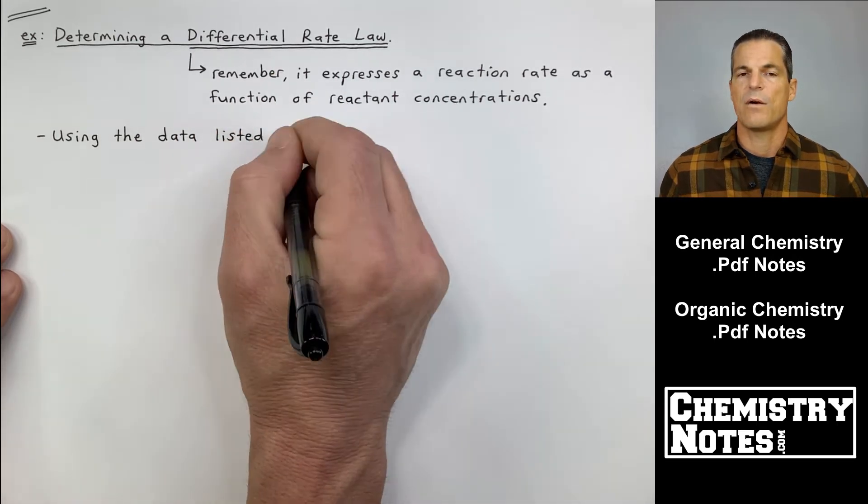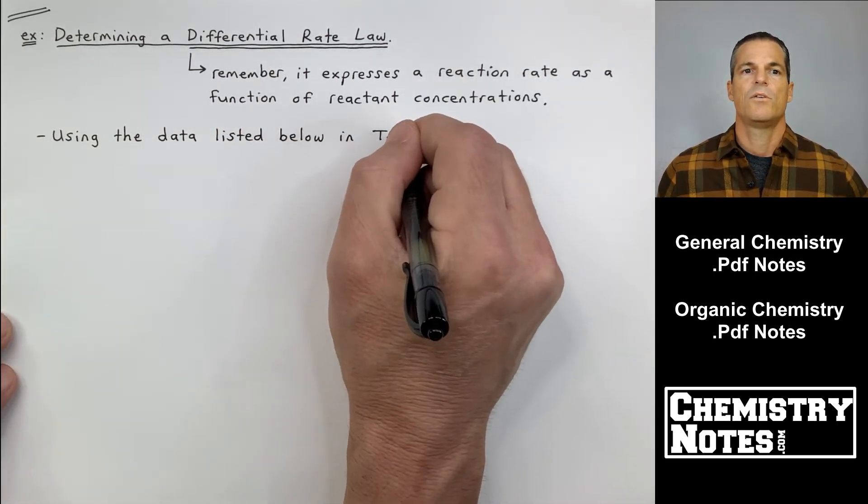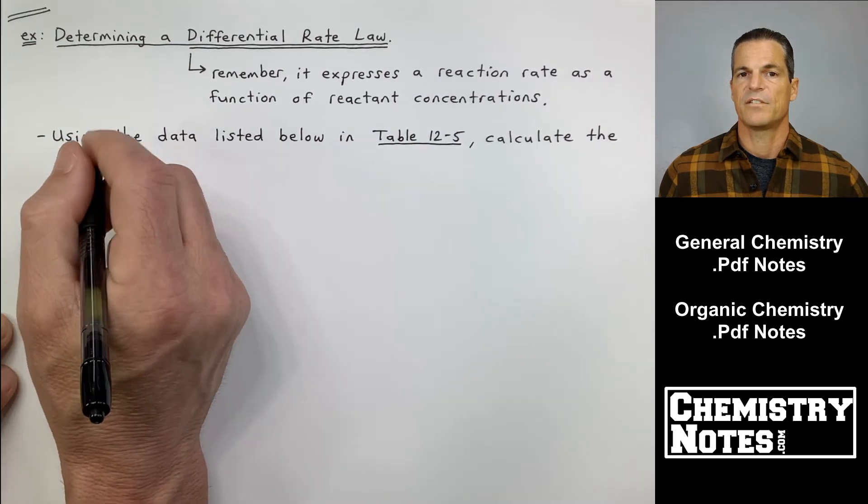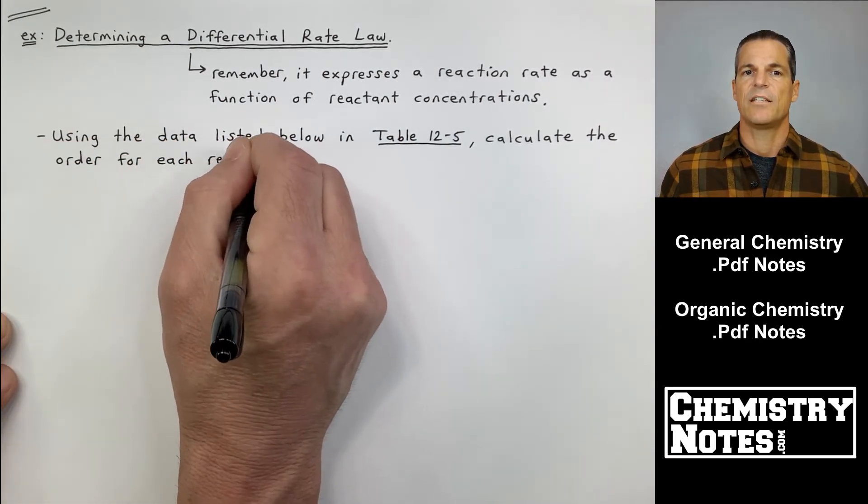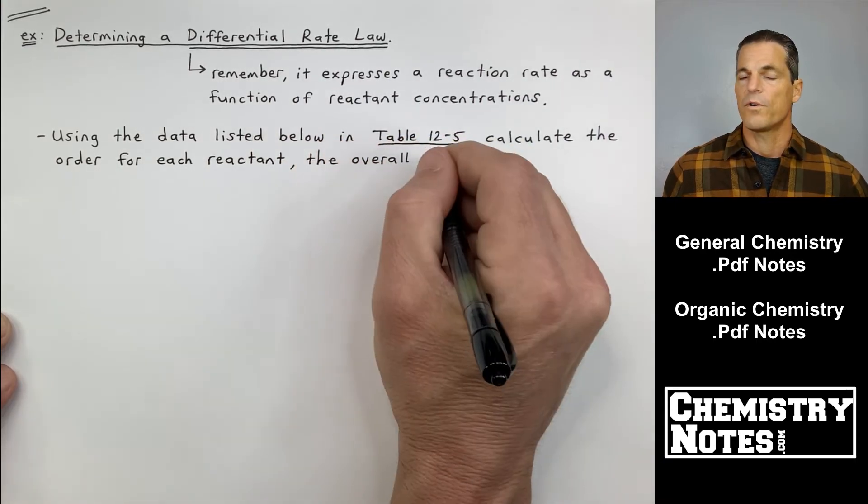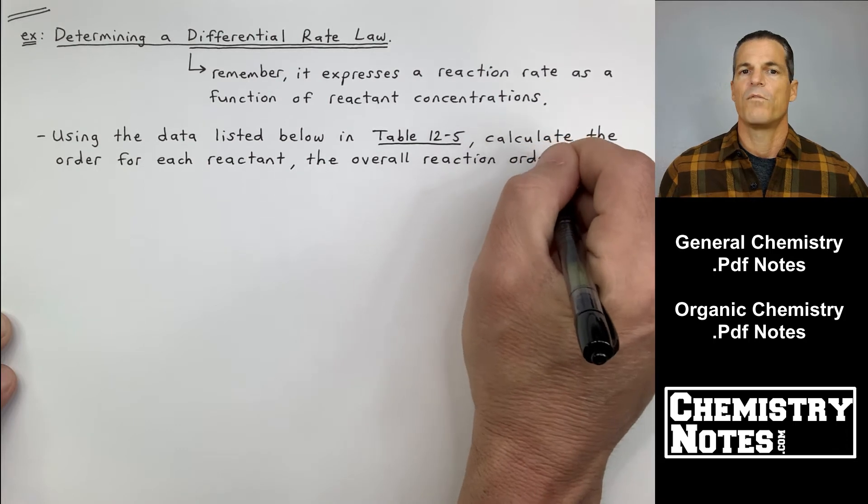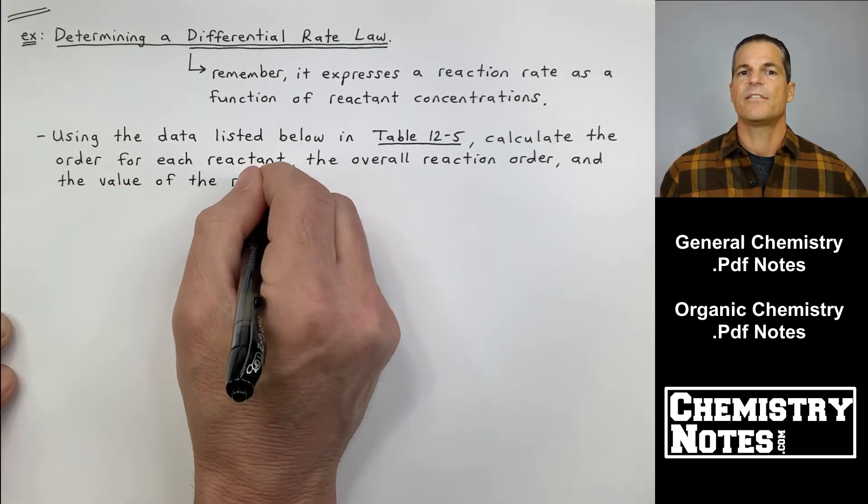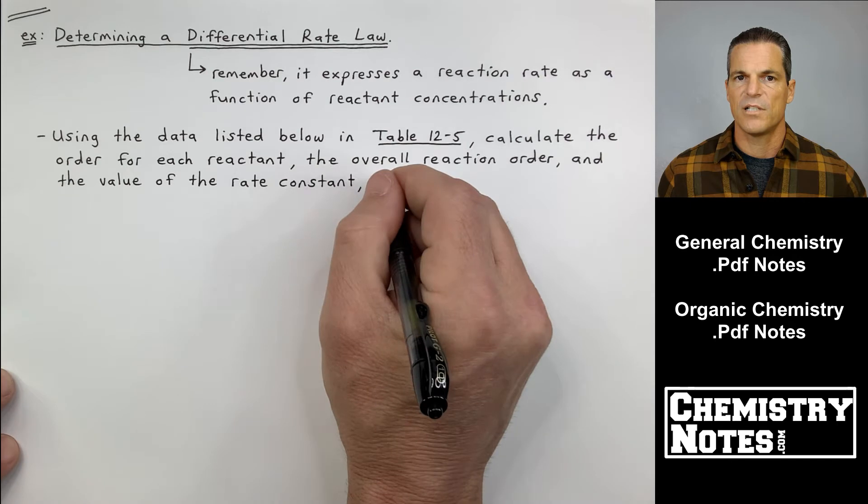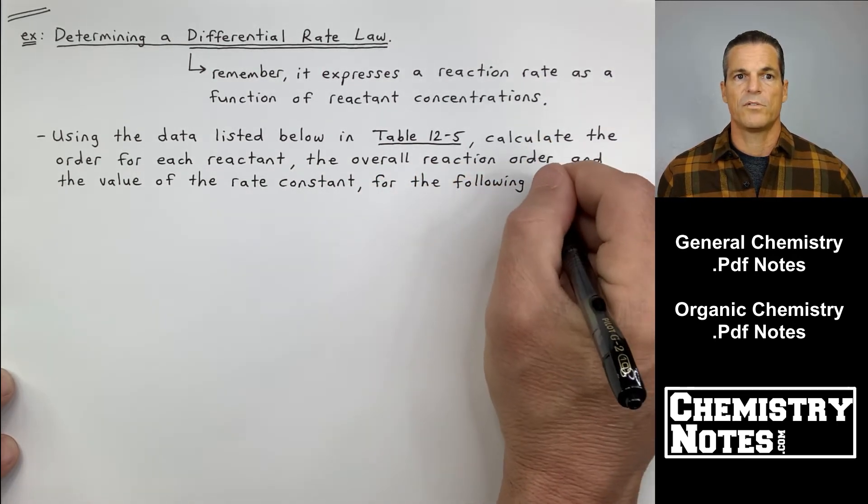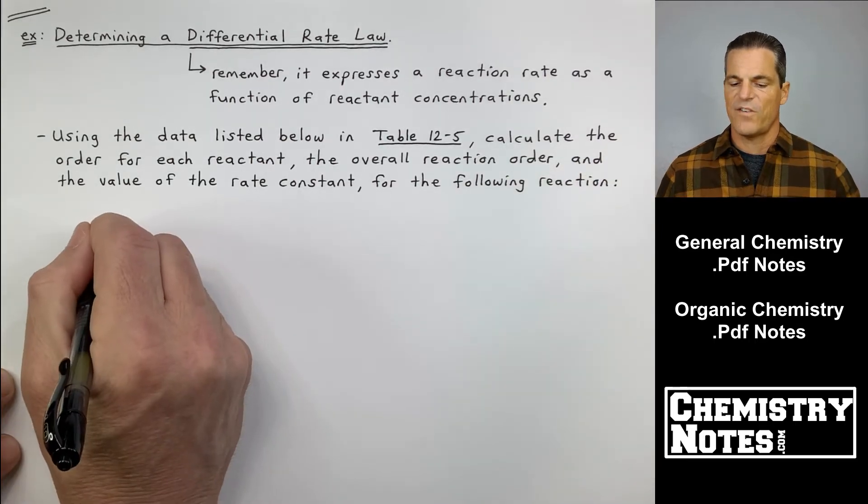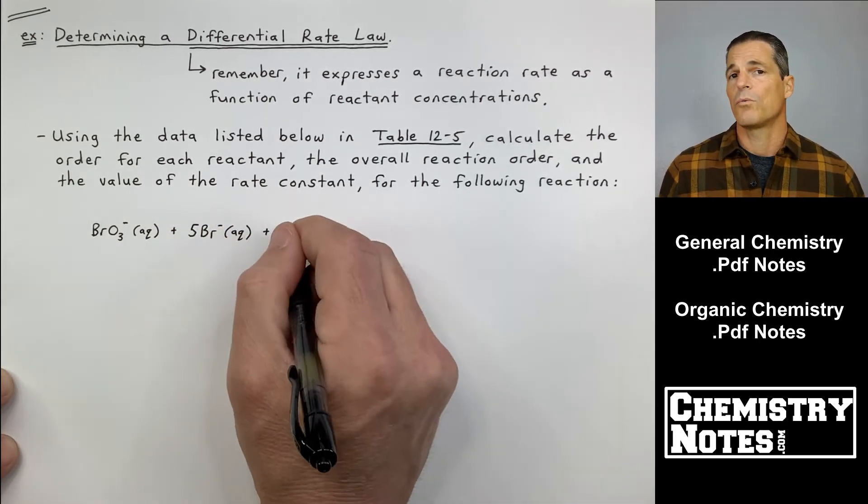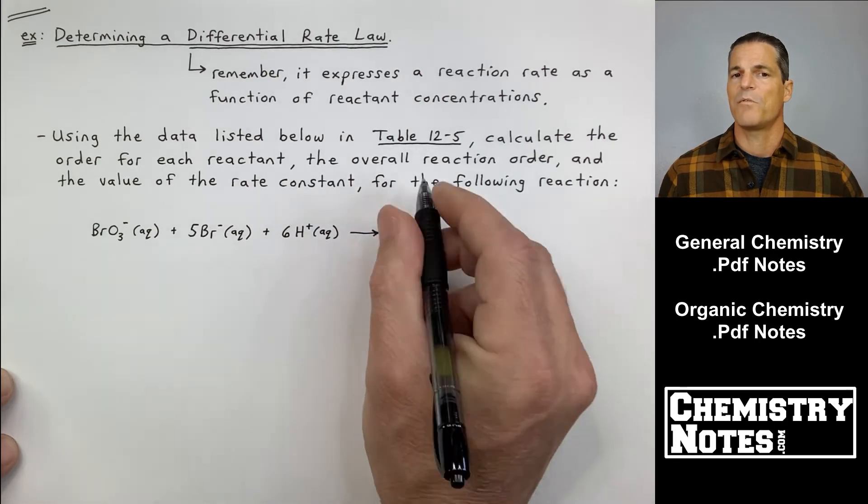Here is our setup for our next sample problem. It says: using the data listed below in table 12-5, I'm going to post table 12-5 in just a second. Using the data listed below in table 12-5, calculate the order for each reactant, calculate the overall reaction order, and the value of the rate constant K. This is an all-inclusive problem. This is a problem similar to most of the problems that you guys will be exposed to. The example I just did, we only had to find N, M, and K. They didn't ask us for the overall reaction order.